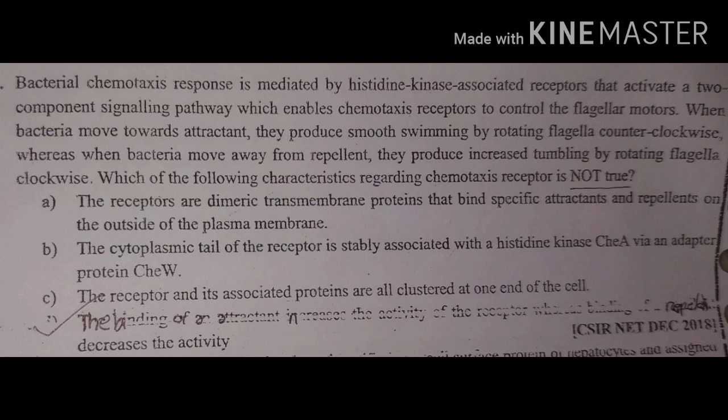Option B is also correct because CHEW transduces the signal from the MCP receptor to CHEA, and CHEA then autophosphorylates itself at the histidine residue. Option C states the receptor and its associated proteins are clustered at one end of the cell. This is also correct because the MCP receptor, CHEW, and CHEA proteins are clustered at one end of the cell.